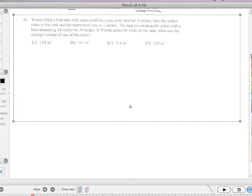Wanda filled the fish tank with water until the water level reached four inches. Then she added rocks to the tank and the water rose to seven inches. The tank is a rectangular prism with base measuring 14 by 24. If Wanda added 85 rocks to the tank, what was the average volume of one of the rocks?